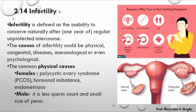Another physical cause is endometriosis. There can also be a problem in the male: at the time of ejaculation, a male normally releases 2 to 4 ml of semen containing 200 to 400 million sperm. In some males, there is a low sperm count, meaning sperm production is low.